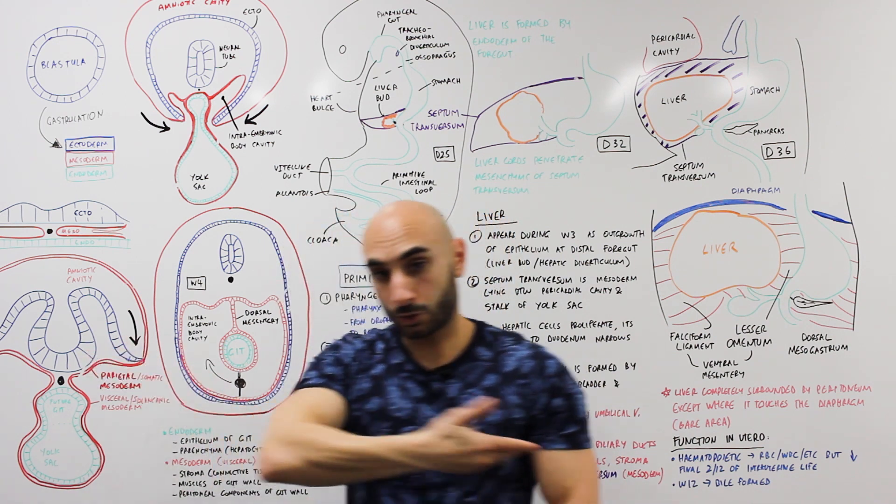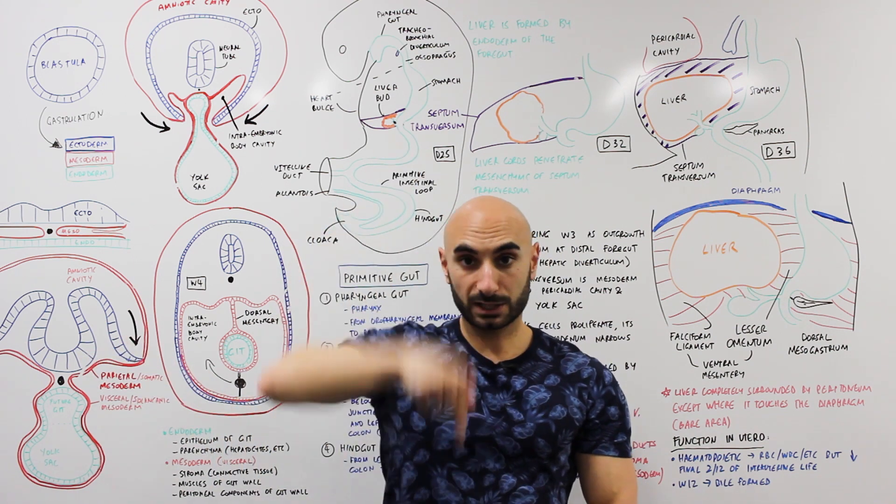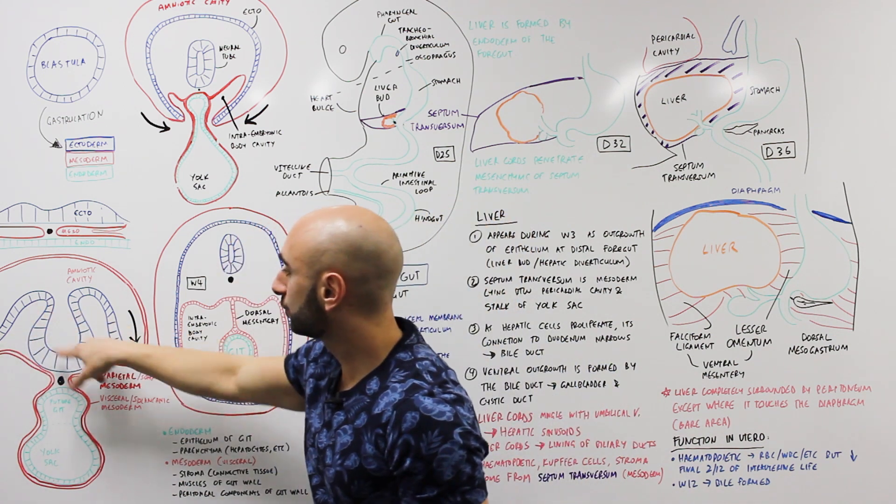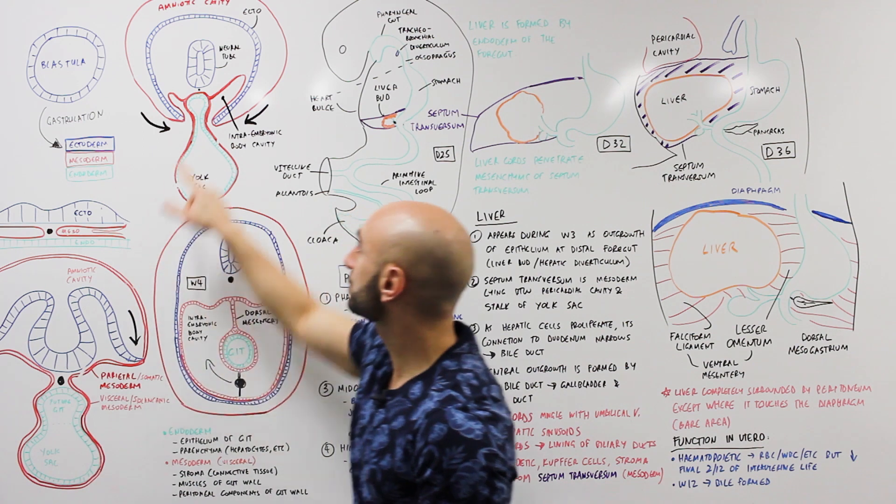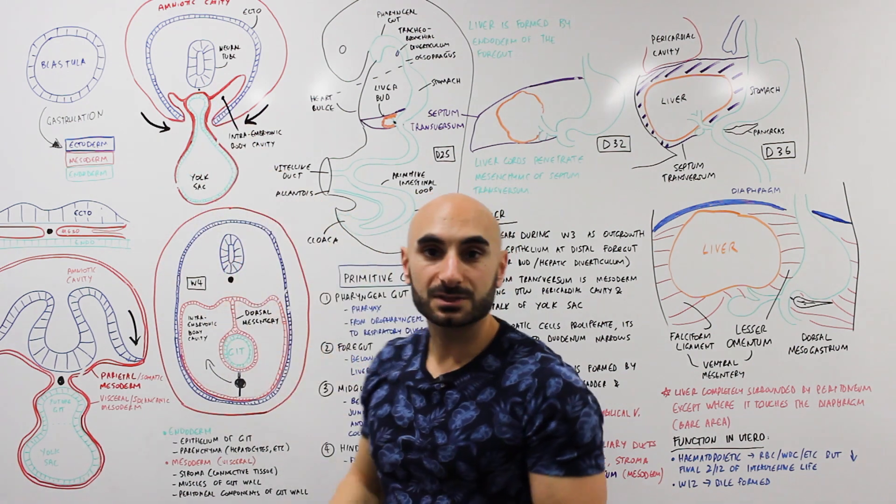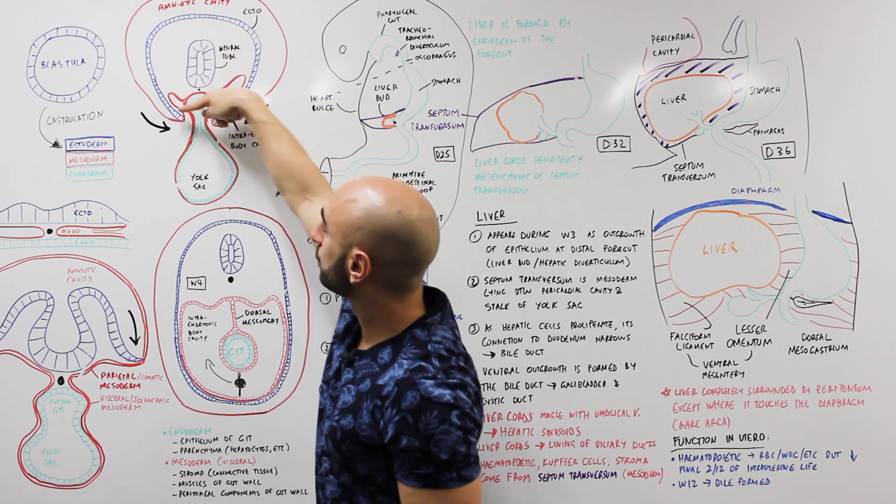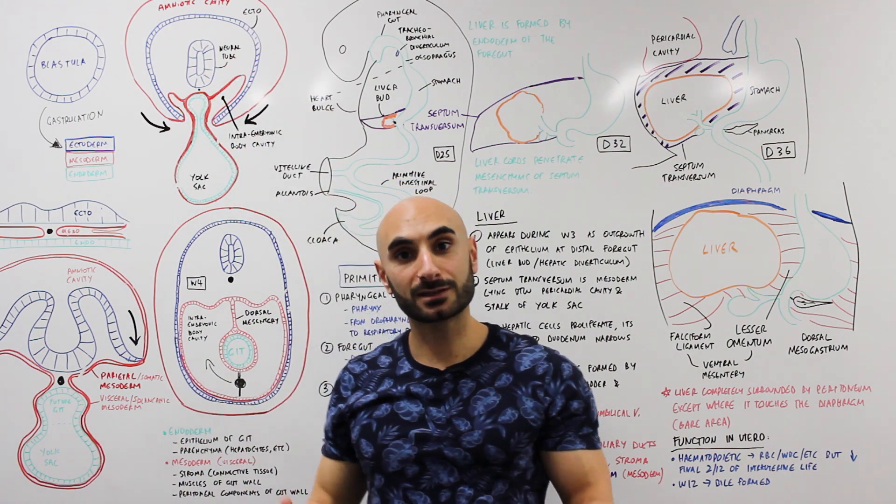It's a cross section of the fetus looking at it from above, and we have here the ectoderm which actually pinches off and becomes a neural tube. You'll notice color-coded in blue, the ectoderm surrounding that'll be the skin.